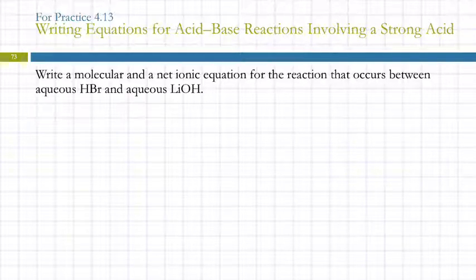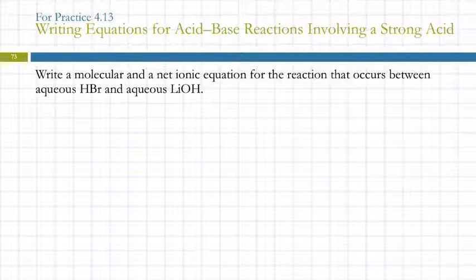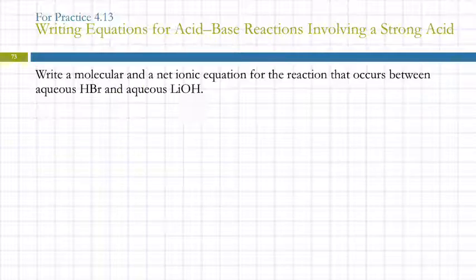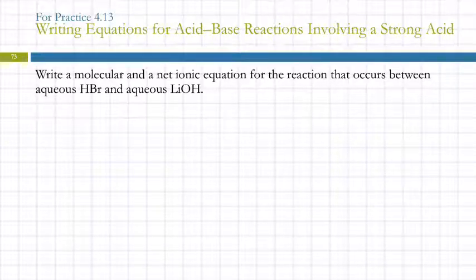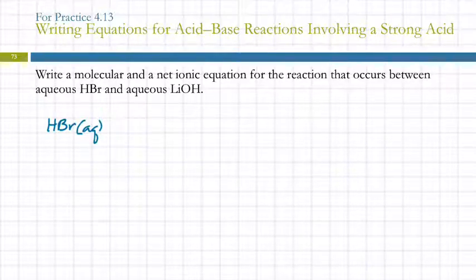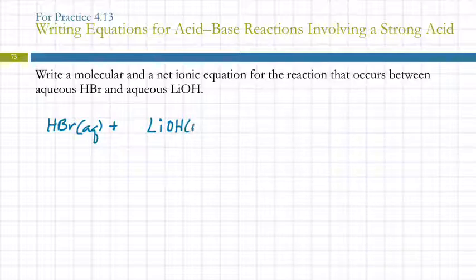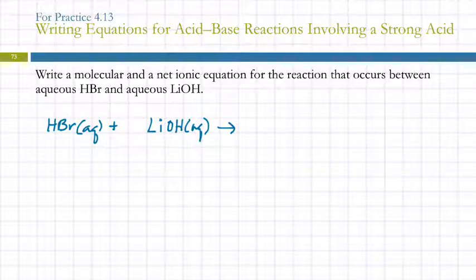Writing equations for acid-base reactions involving a strong acid: write a molecular and a net ionic equation for the reaction between aqueous HBr and aqueous LiOH. We're given the formulas for the reactants—HBr aqueous and LiOH aqueous—so we don't have to figure out the states.